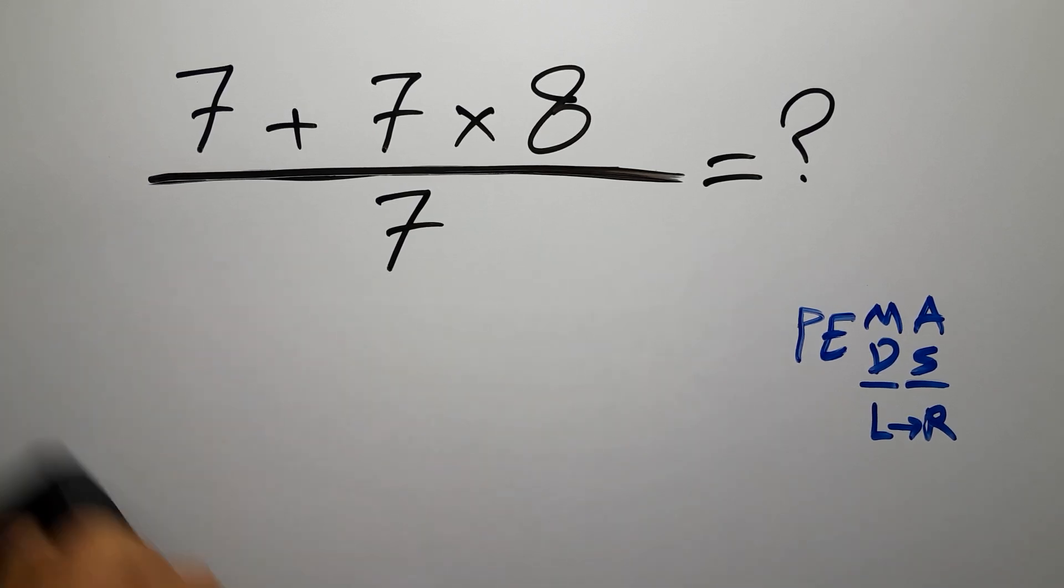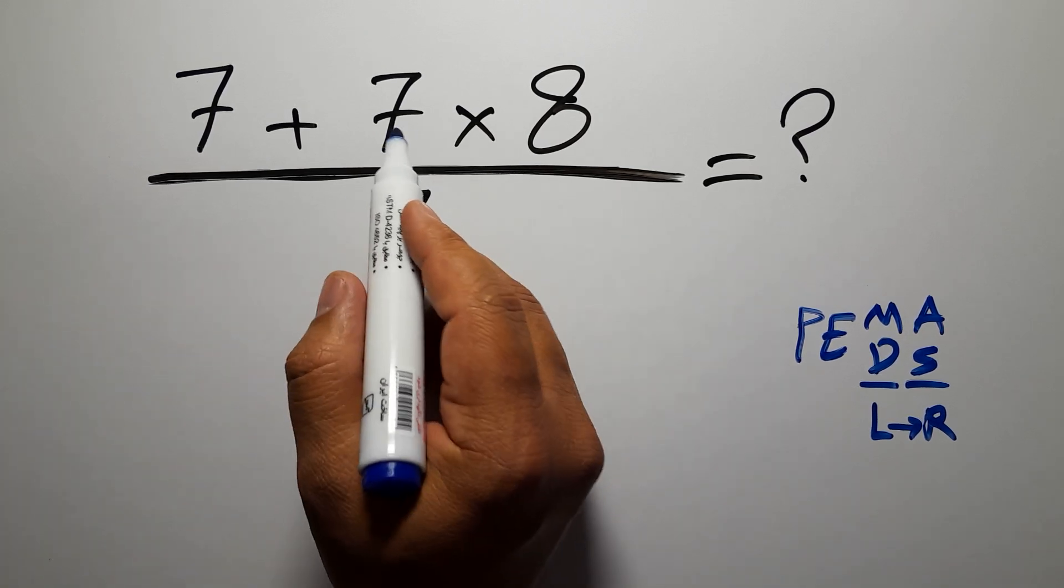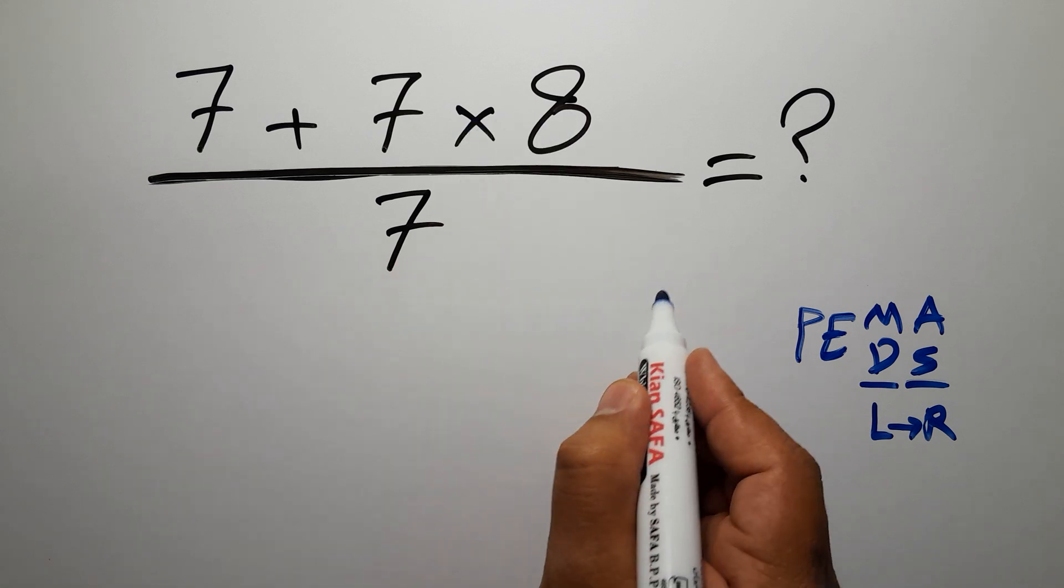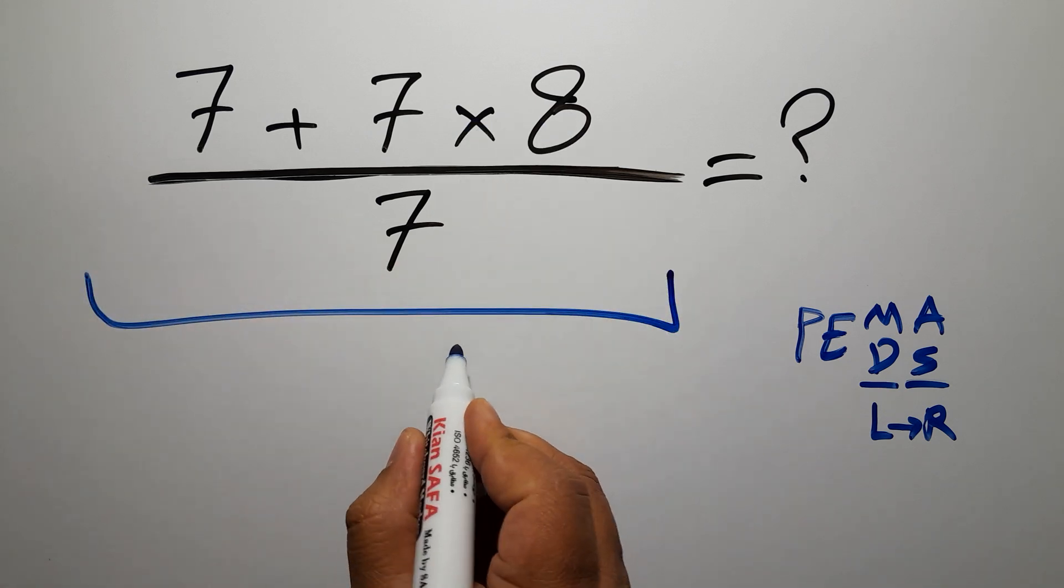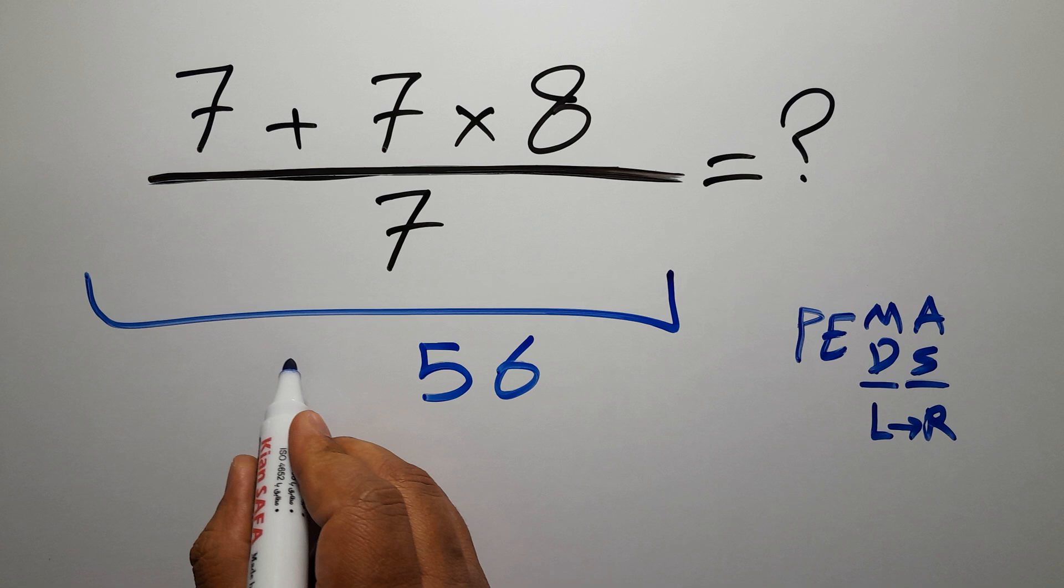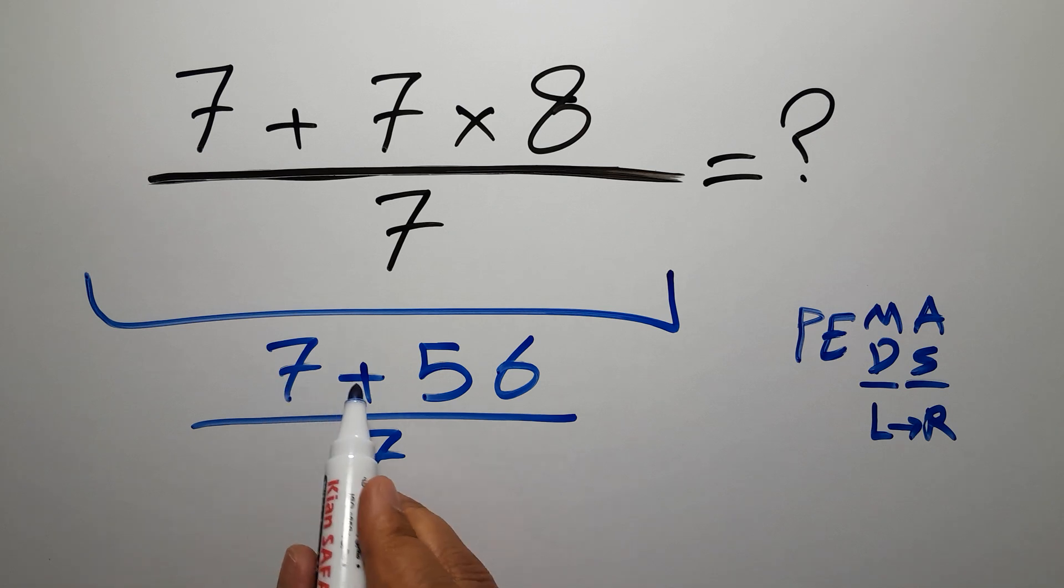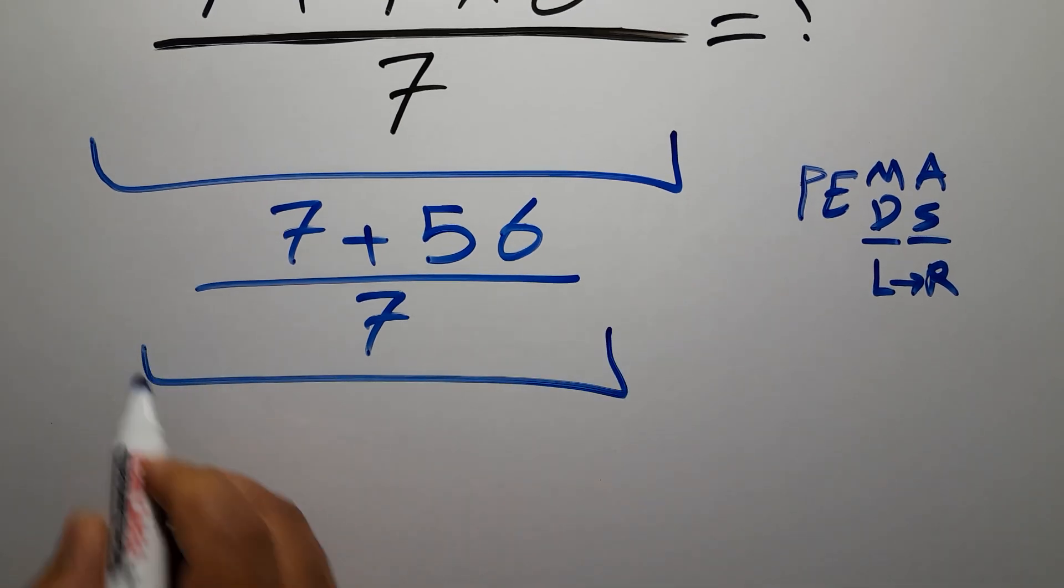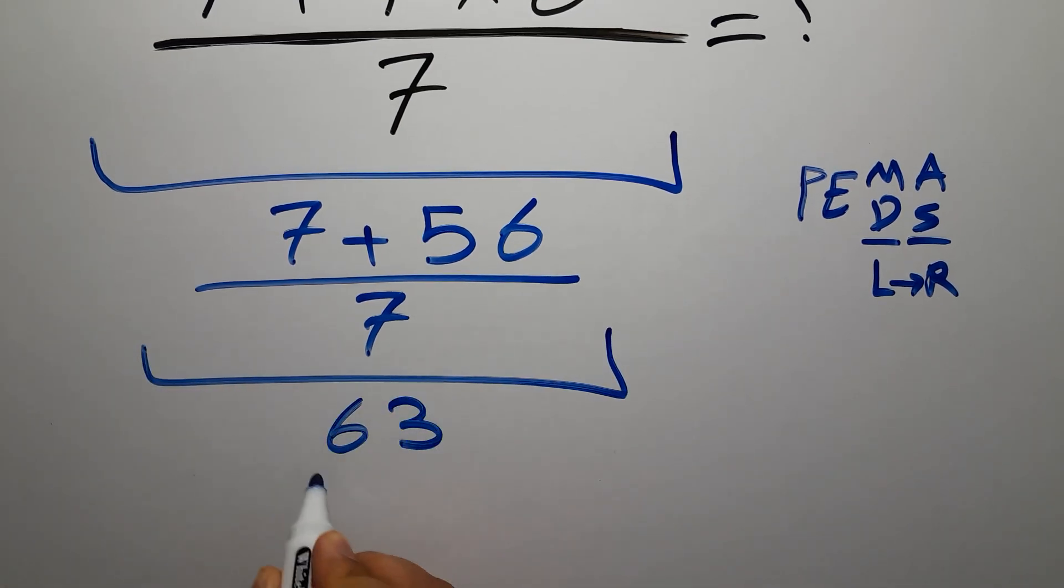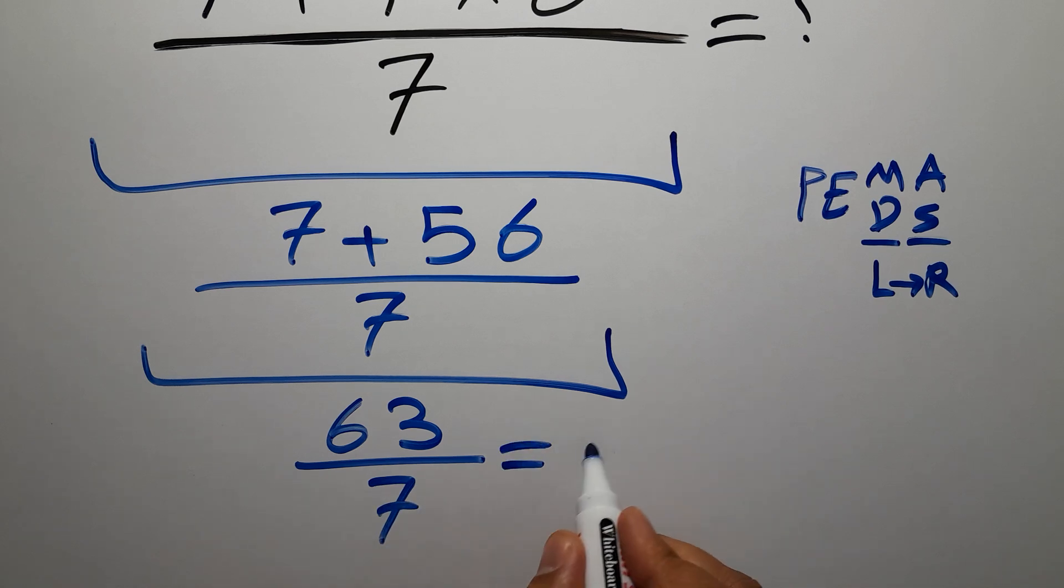So first, 7 times 8 equals 56, so we have 7 plus 56 over 7. Now 7 plus 56 gives us 63, so 63 over 7, which equals 9. And this is our final answer to this problem.